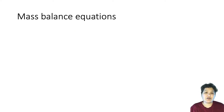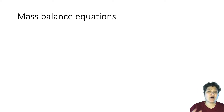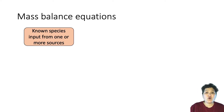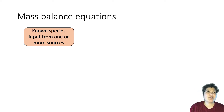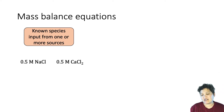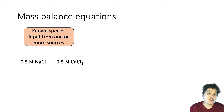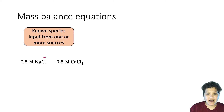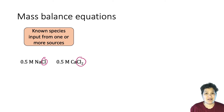Next we're going to look at mass balance equations. These tend to break down into one of two types. The first is a known species input from one or more sources. For example, in a two-source system: if you have 0.5 molar NaCl and 0.5 molar calcium chloride in a system, you're getting chloride ions from two different sources as these ionic compounds dissociate.